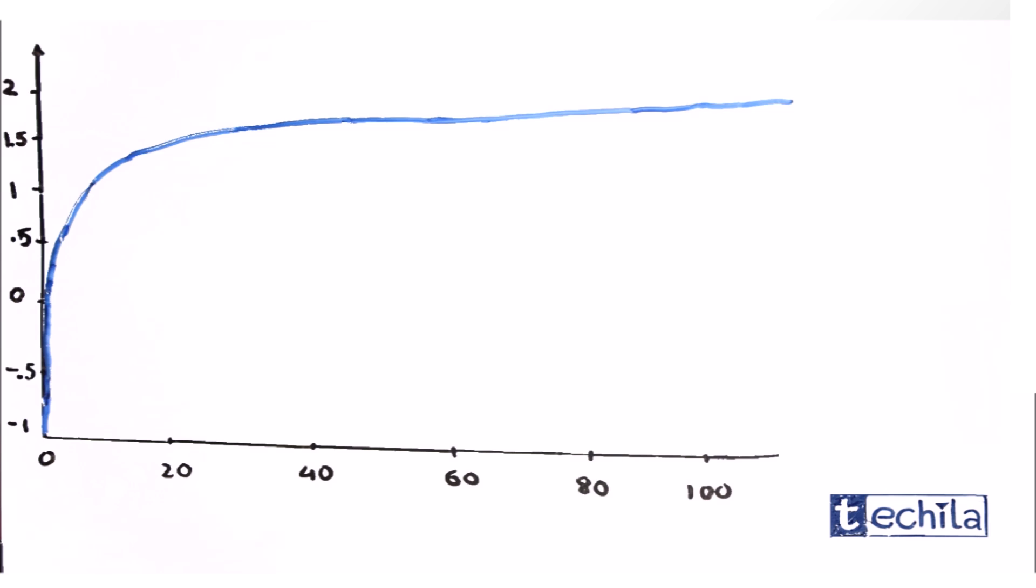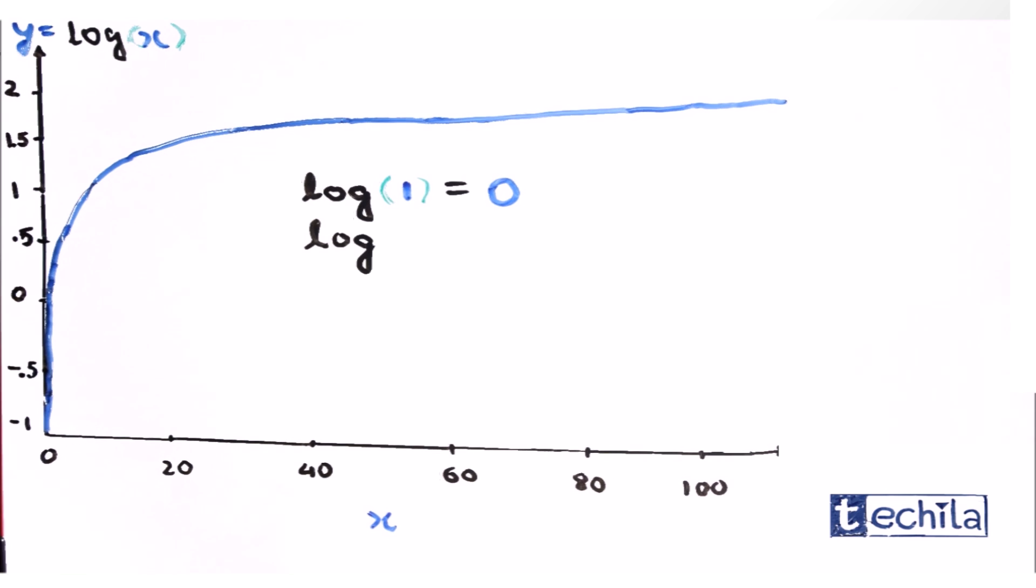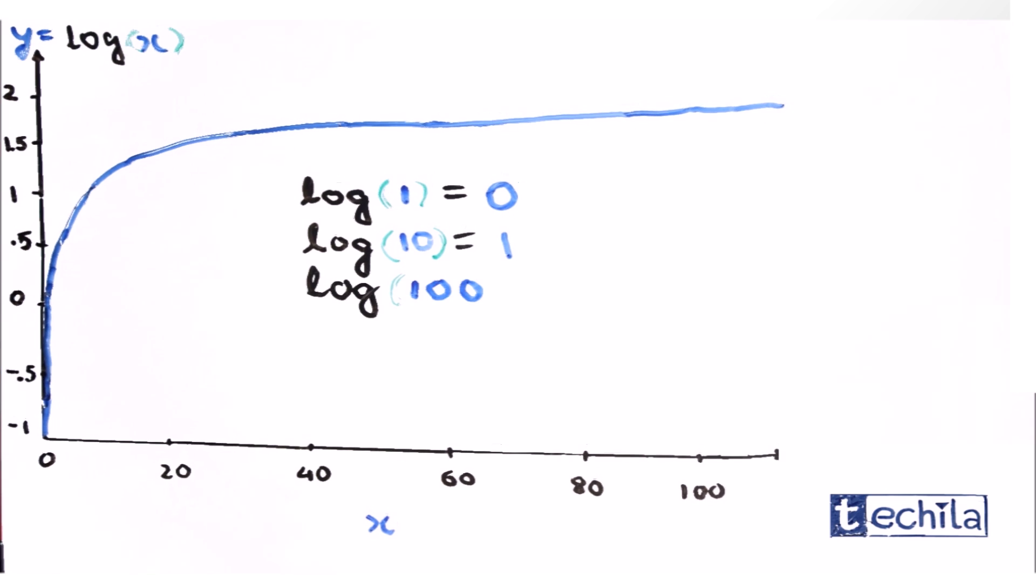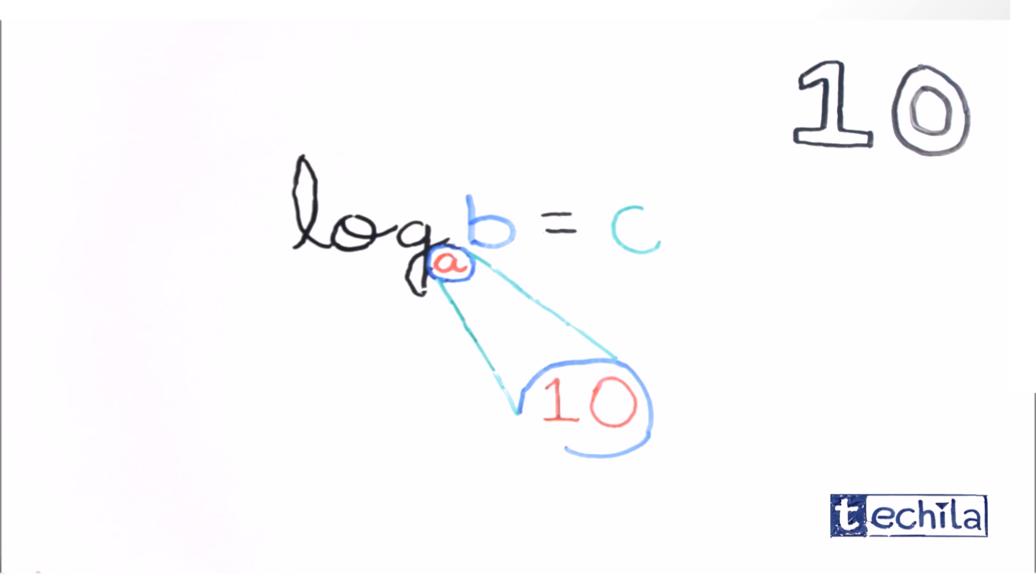The graphical representation of log with the base 10 shows that log with the base 10 of 1 is 0, log with the base 10 of 10 is 1, and log with the base 10 of 100 is 2. This property of log with the base 10 made mathematical calculations even simpler and much more convenient in the decimal number system.